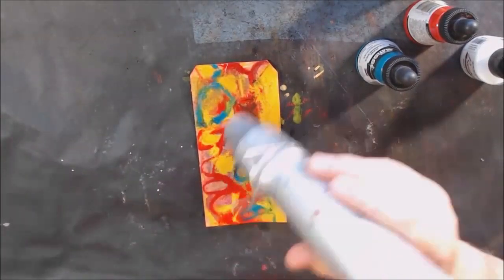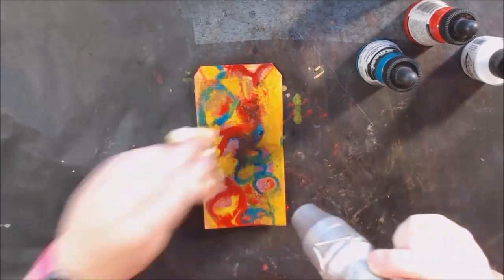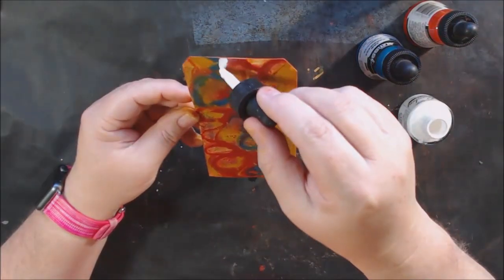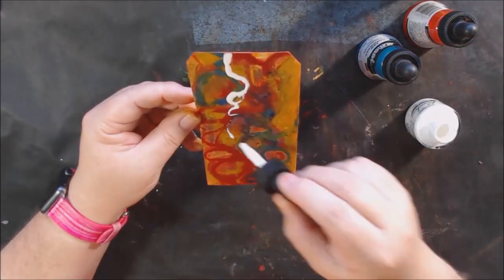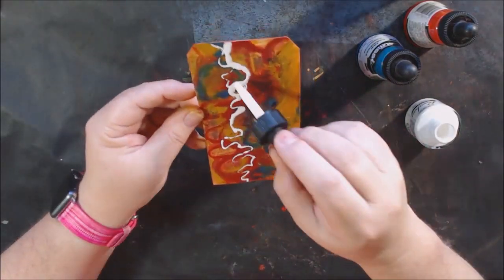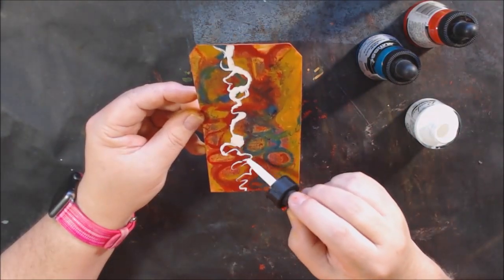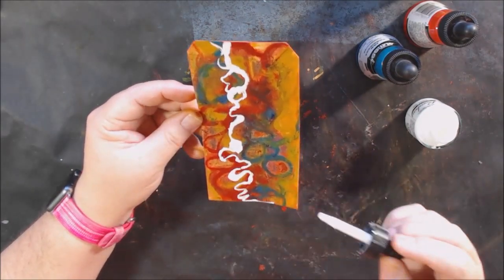It pretty much obliterated what was underneath. There's still some of that purple peeking through but the purple had darkened so much from the sealing that it almost looks muddy. So once that was dry then I decided to put some white on there to try to add an extra dimension of squiggle.